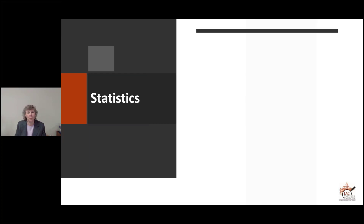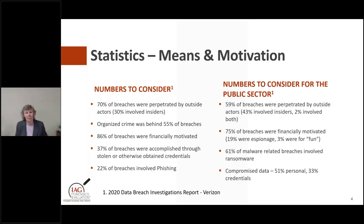First, we're going to talk about statistics and why these things matter. Why are we talking about these things today? There are lots of breaches that occur every year. 70% of the breaches across all different sectors come from the outside. When it comes to the public sector, almost 60% are coming from outside actors, but there's a lot of inside involvement — that is a concern we need to address. In the public sector, 61% of the malware breaches involved ransomware, which we'll talk about in a moment.